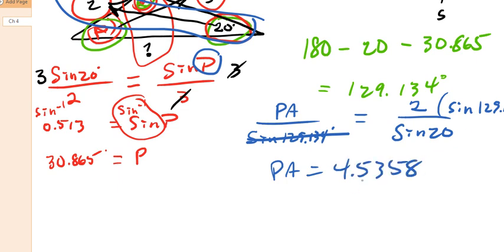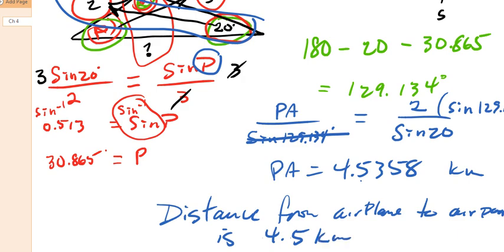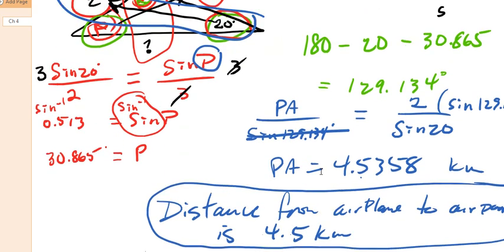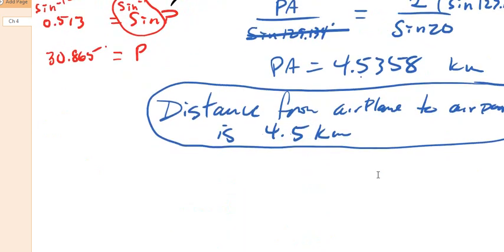The question asks to round to the nearest tenth of a kilometer. So the distance from the airplane to the airport is 4.5 kilometers. However, someone pointed out that a left turn could be a hard left — almost doubling back towards the airport — and that is exactly true as well.